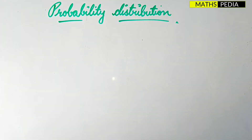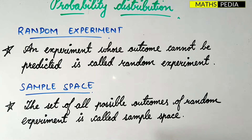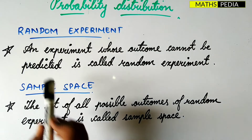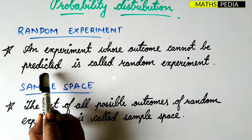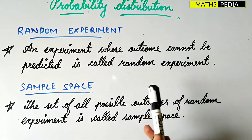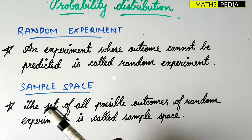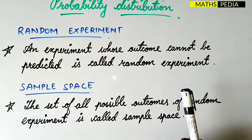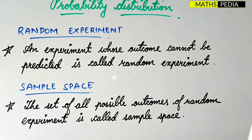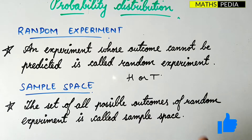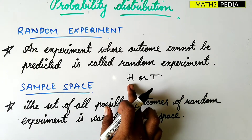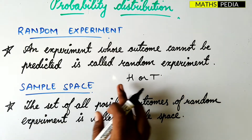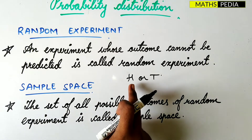The first point is random experiment. An experiment whose outcome cannot be predicted is called a random experiment. For example, tossing a coin is a random experiment because there are two possible outcomes — head or tail. When you toss a coin, we cannot predict with 100% certainty whether you will get head or tail, and that is why it is considered a random experiment.